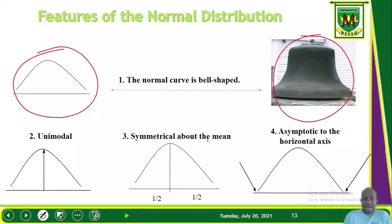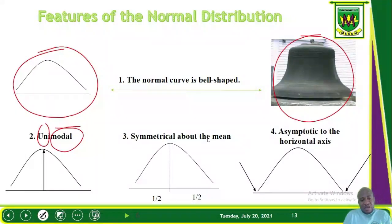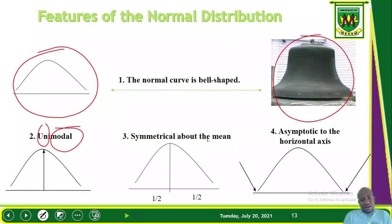The second major property of the normal distribution is that it is unimodal. Unimodal means one mode. We've learned mode as one of the measures of central tendency — it is the number which appears the most. With the normal curve, it always presents one mode, which is why we call it a unimodal distribution.